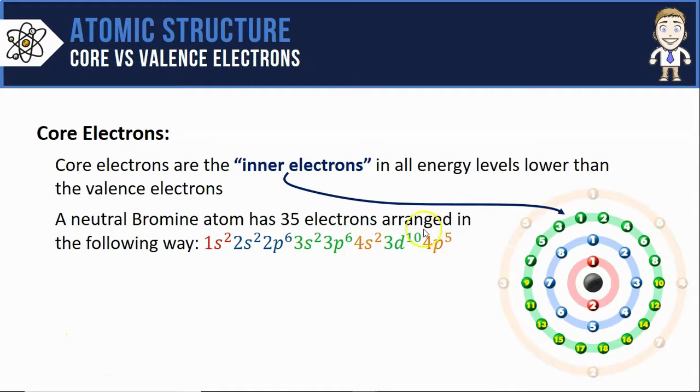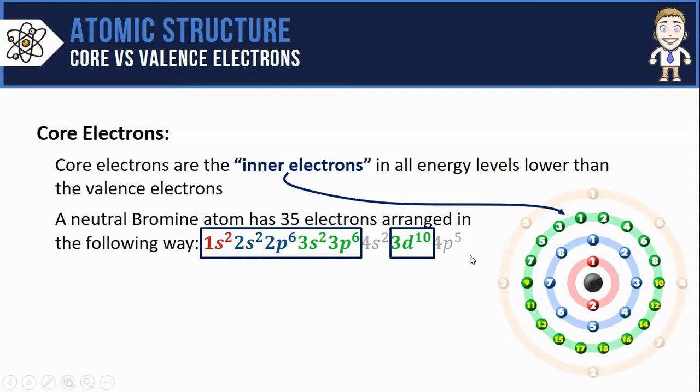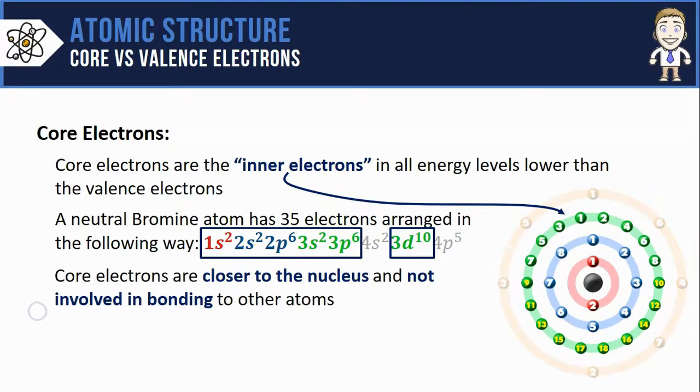And it works the same way on the configuration. We already identified the 4s² and the 4p⁵ as the valence electrons. So the core electrons are everything in the first, second, and third energy levels.